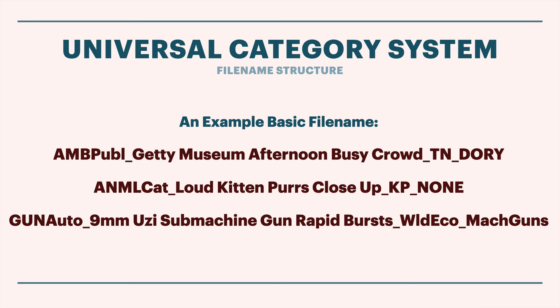Here are a couple more examples. Animal cat - loud kitten purrs close up - Kai Paquin - and none in this case, to indicate that this wasn't recorded for a particular show or project. We use none because a lot of the scripts and tools will expect something in this part of the file name. The four parts of the file name are required, so even if it wasn't made for a show, you should put something there like none. By leaving it blank, several of the scripts and tools will simply break. The last one is a bit longer: GUN_AUTO for machine gun, nine millimeter Uzi submachine gun rapid bursts, WILD_ECHO as an abbreviated version of Wild Echoes - my nature sound artist name - and machine guns as the name of a fictitious library. The goal is to create file names that are very readable but convey at least these four parts of information.